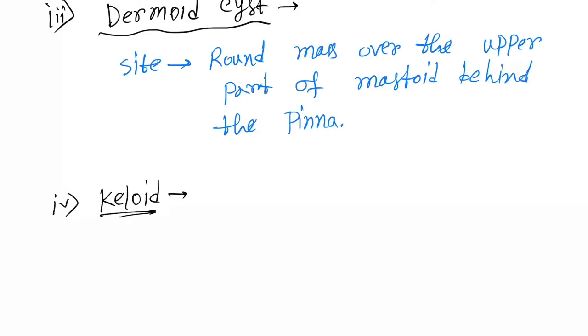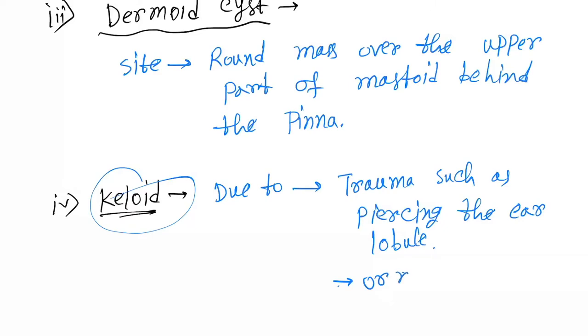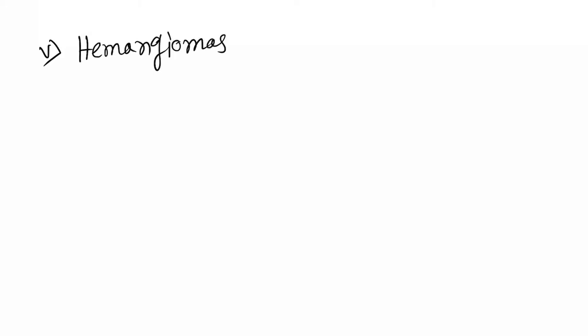The fourth benign tumor is the keloid. It occurs due to trauma such as piercing the ear lobule — many people pierce their ear lobule for holding earrings, and at the time of or after piercing, a keloid occurs. Other causes include ornaments and surgical incisions.